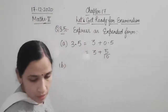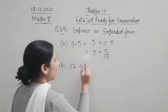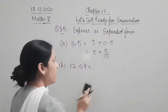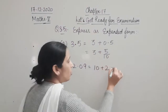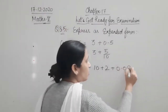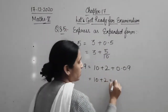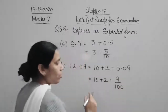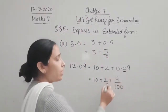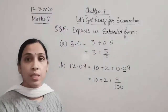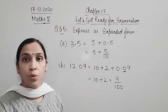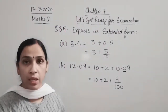Let's take one more example, part D: 12.09. What will we do? 12 can be written as 10 plus 2, because tens place then ones place. There is 0 in the tenths place, so it is not necessary to write it. So 12.09 becomes 10 plus 2 plus 9/100. If you want to include the zero term, you can write it, but it doesn't contain any value. We only take numbers which have some denomination value.